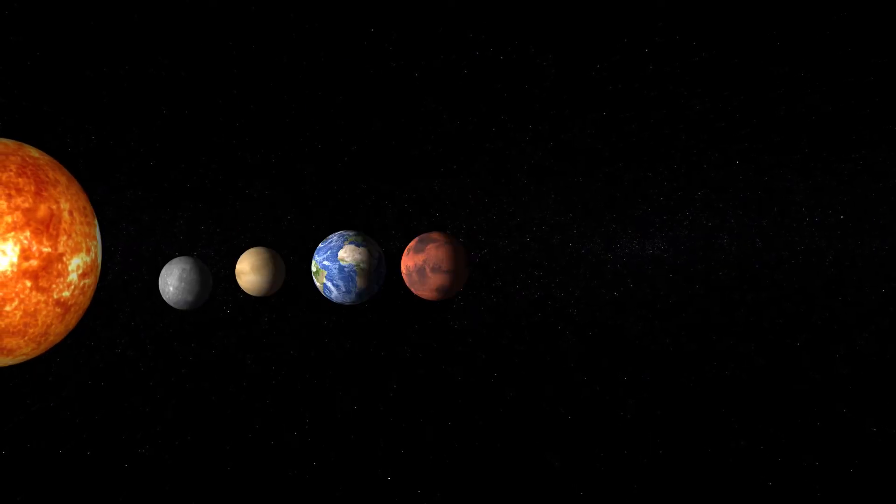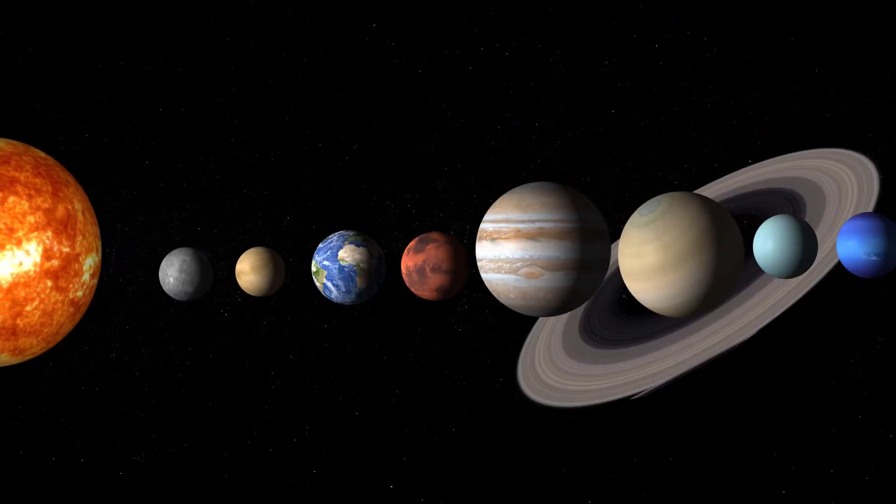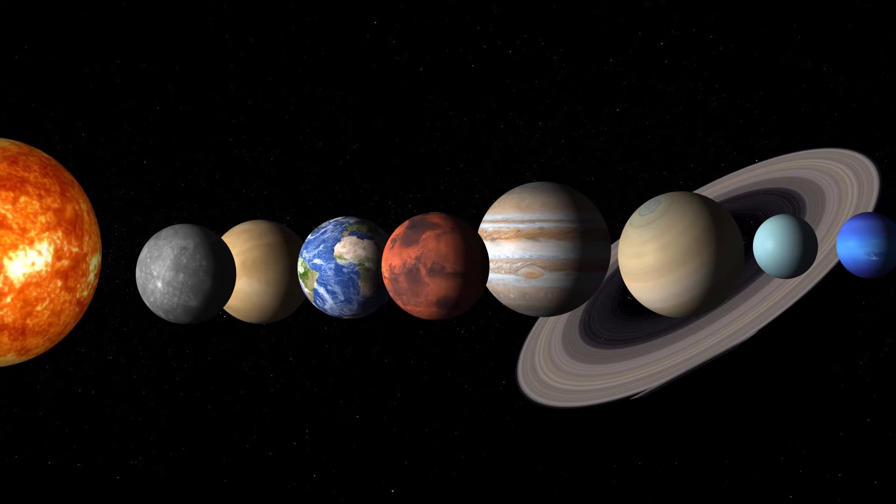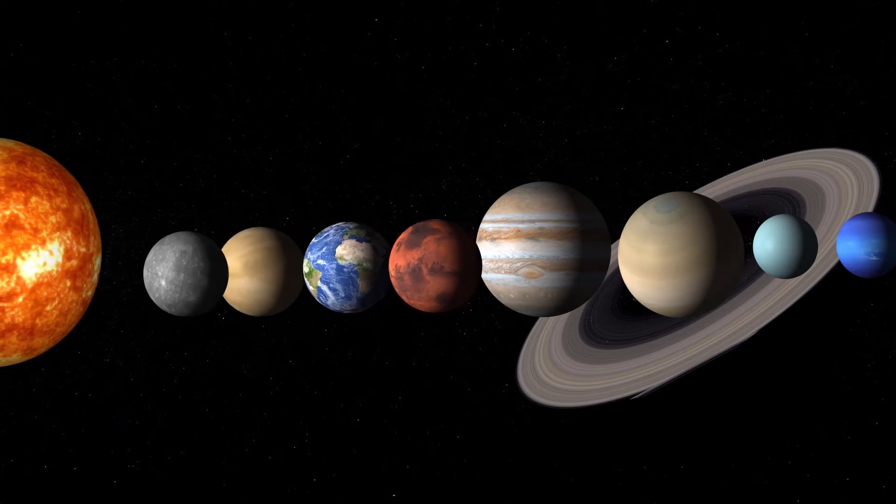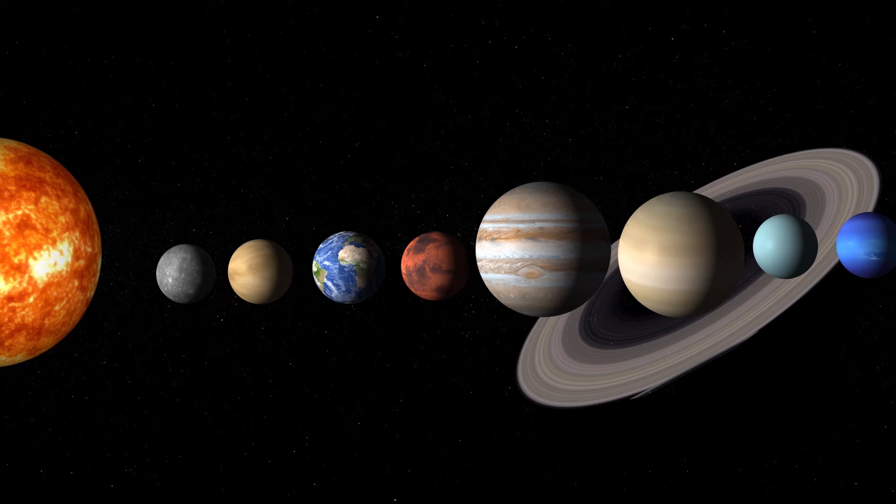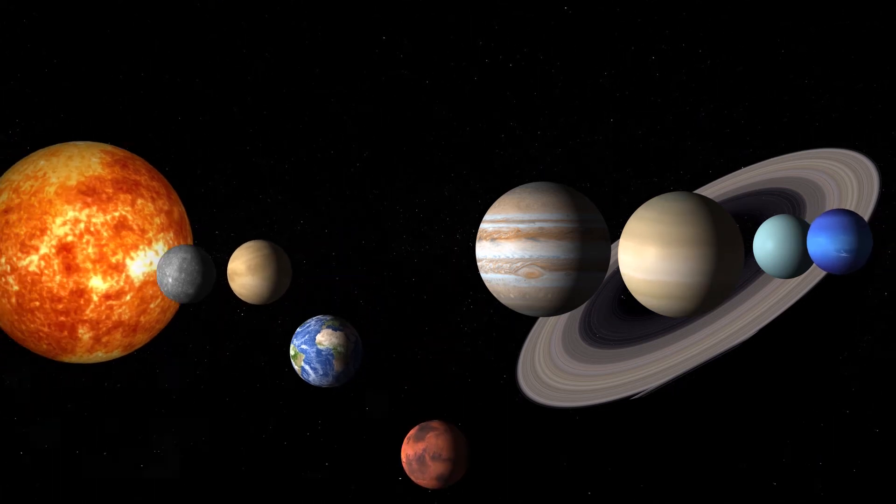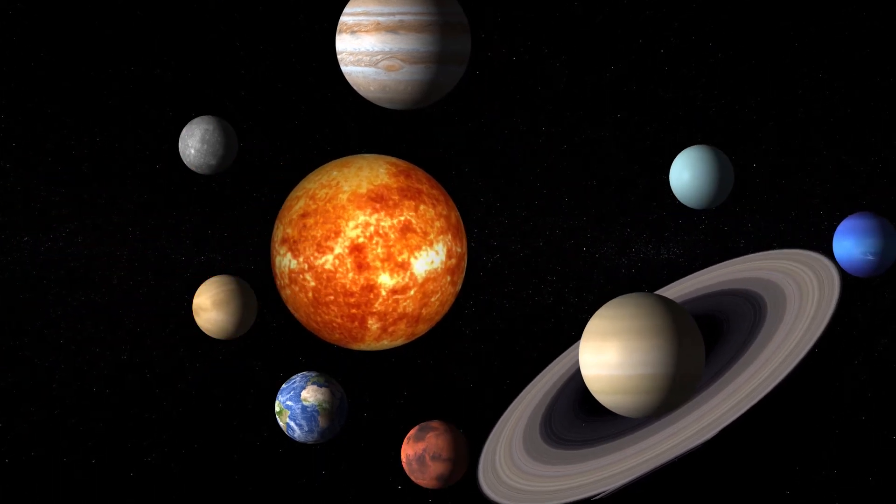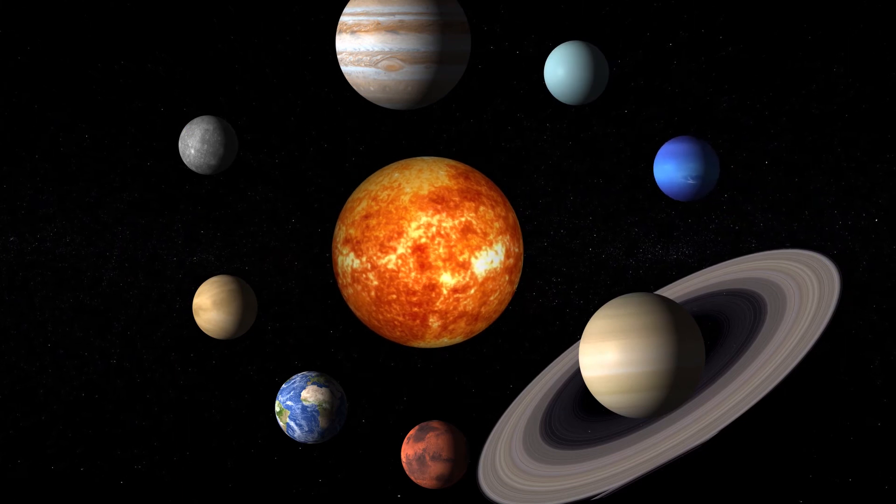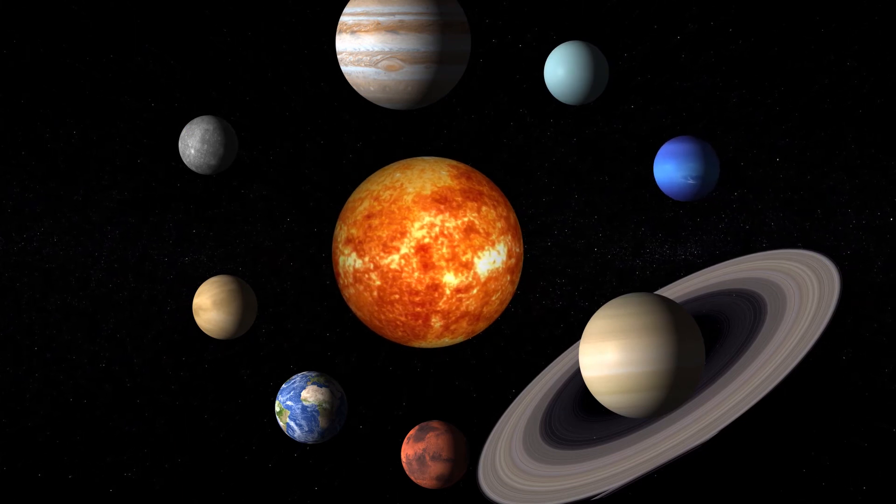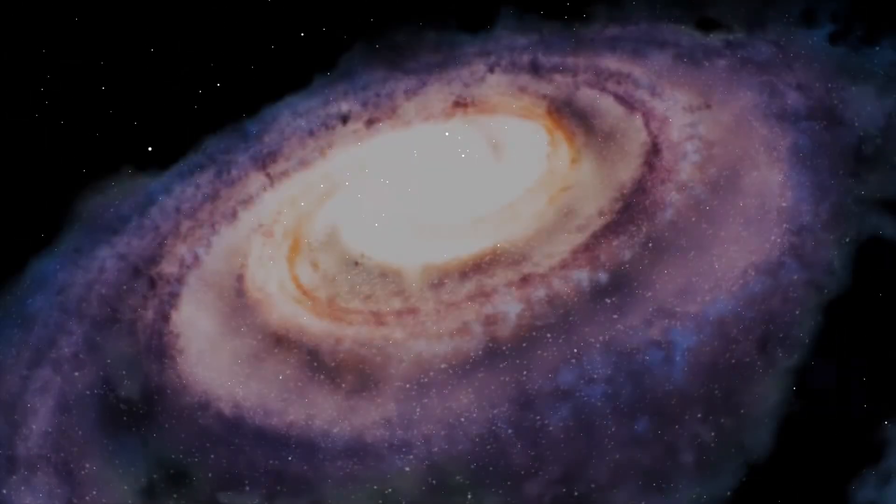Our solar system contains four terrestrial planets: Mercury, Venus, Earth, and Mars. A key component of a terrestrial planet is that it needs to be made of metals and silicate rocks and have a solid surface. However, our solar system is not the only star system in our galaxy. The Milky Way is packed with other stars.